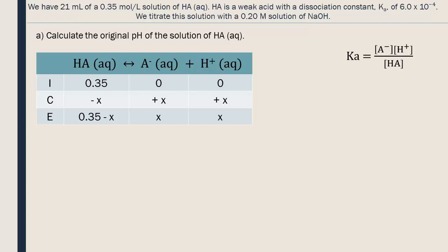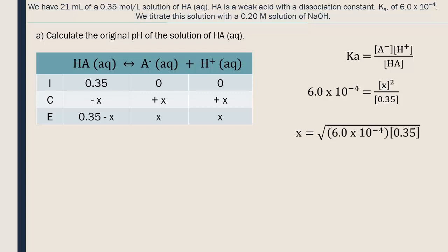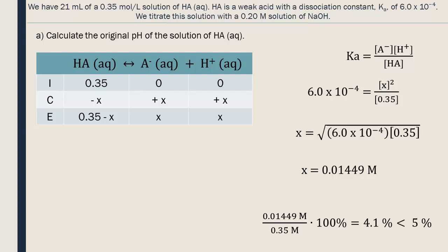To determine the value of x, we will use the dissociation constant given in the question. We can insert our values into the equation. To save some time, we can use the 5% rule, where you can ignore the subtraction of x from the concentration of the acid, if x is less than 5% of the original concentration. We do the calculations making the approximation that the concentration did not change in the dissociation. By doing some algebra, we find that the value of x is 0.01449 moles per liter. To verify the 5% rule, we divide by the initial concentration of 0.35 moles per liter and multiply by 100. The value of x is 4.1% of the initial concentration of the acid, which is less than 5%, so we can say that the change in the acid's concentration is insignificant.